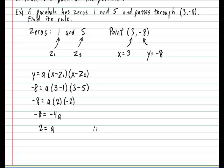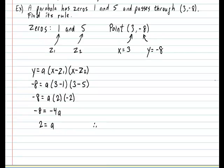Therefore, the rule for this parabola in factored form is the following: y equals the value of a, we just found it to be 2. And our first bracket, we have x subtract our first zero, which is 1. And the other bracket, x subtract our second zero, which was 5. So minus 5.